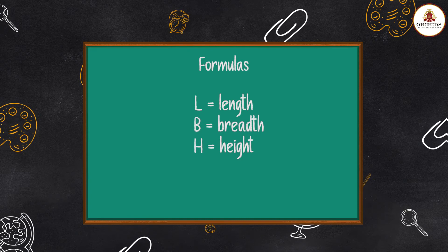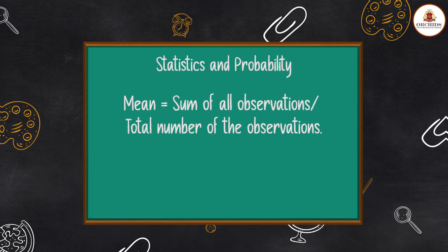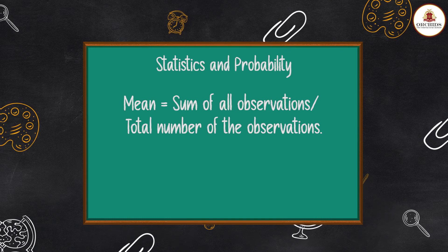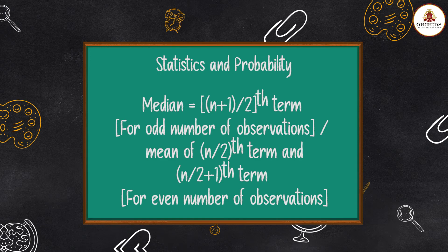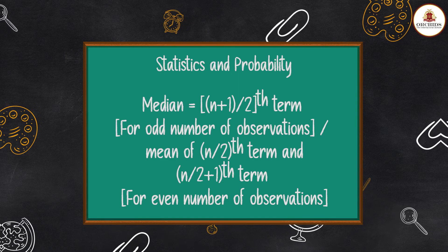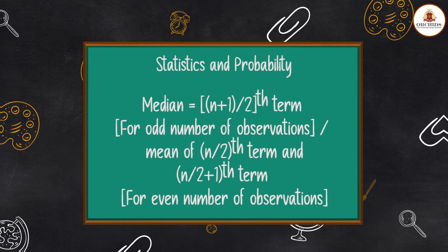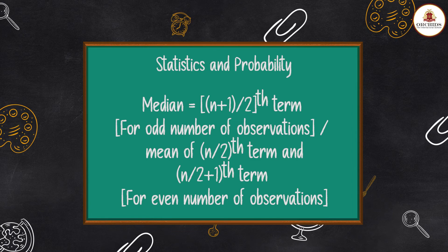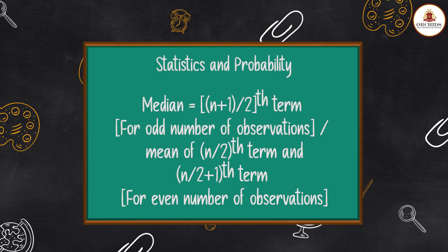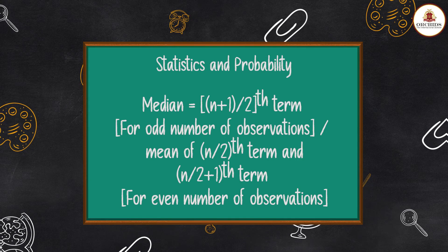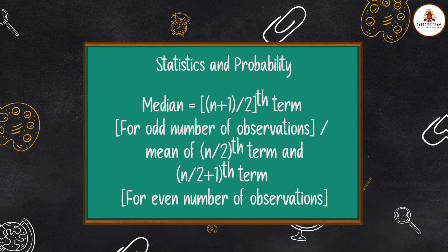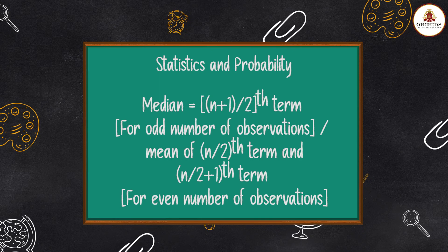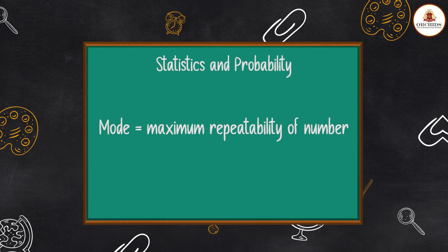Statistics and Probability: Mean = sum of all observations ÷ total number of observations. Median = [(n + 1) ÷ 2]th term for an odd number of observations, or the mean of the (n/2)th term and the (n/2 + 1)th term for an even number of observations.